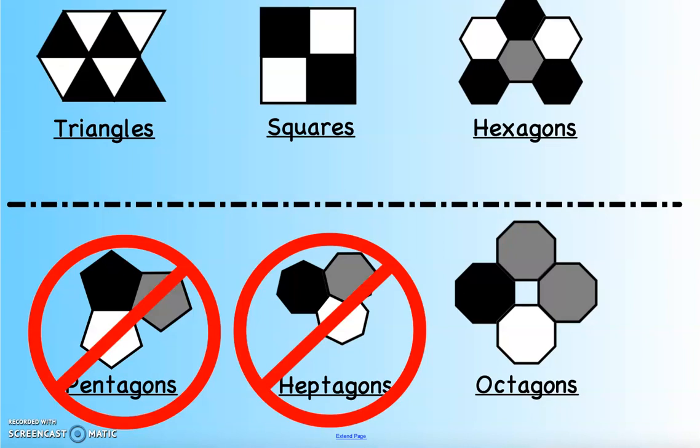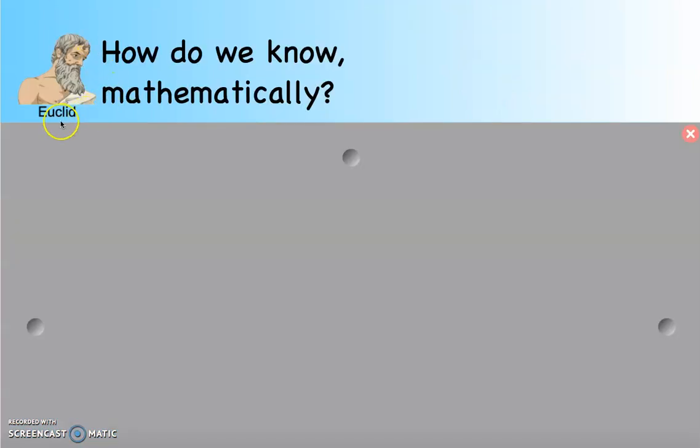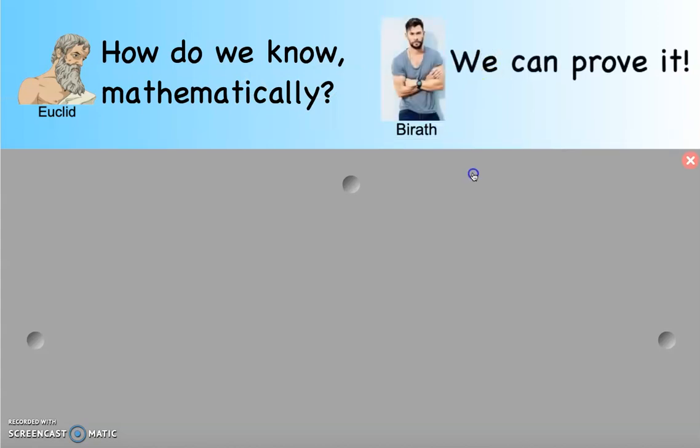But let's talk about this for a little bit here. If Euclid was still around today, Euclid would say, how do we know mathematically? How do we know that there are only three? I saw the pictures, but how do I know like a 10-sided polygon, a decagon, or a 15-sided polygon? How do I know that there aren't more out there? Well, as Mr. Brath would say, we can prove it. We can prove that there are only three.